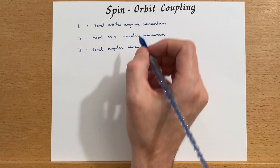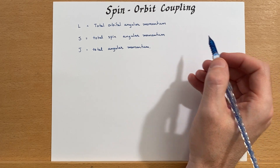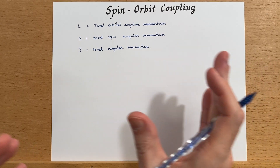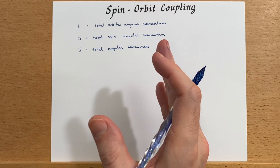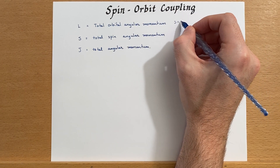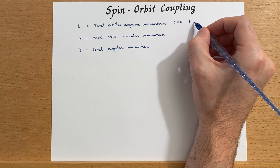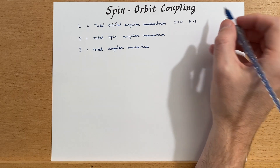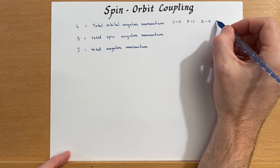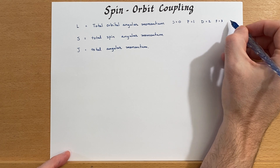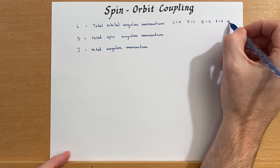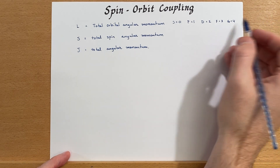L corresponds to our S, P, D, F, G, H, I quantum numbers, counting from zero on up in the normal counting fashion. So S is L equals zero, P is L equals one, D is two, F is three — I'm writing a few of these out because we're going to do some work with these — and then continuing on up.